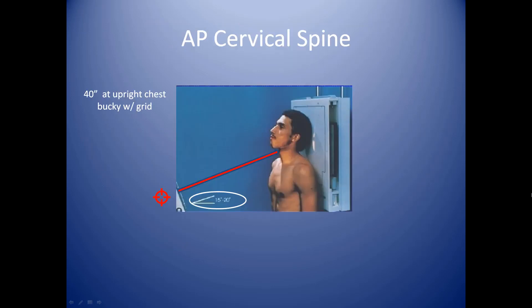For the AP cervical spine, you want to be at 40 inches at the upright chest bucky with a grid. This image has a flaw I'll explain in a moment. You want to center your crosshairs just above the patient's adam's apple and just below the chin. We are angling the tube 15 degrees — I would stick to 15 degrees because modern patients watch more TV and look at their phones, so neck angles have decreased and we're not seeing as many hyperlordotic patients.